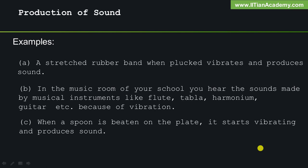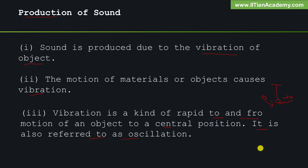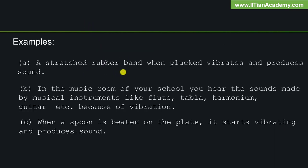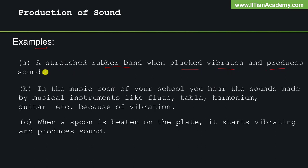We have seen how technically sound is produced. Now we will see a few examples of how different sounds are produced. A stretched rubber band, when plucked, vibrates and produces sound. In the music room of your school, you hear the sounds made by musical instruments like flute, tabla, harmonium, guitar, etc. When a spoon is beaten on a plate, it starts vibrating and produces sound.